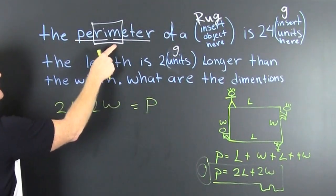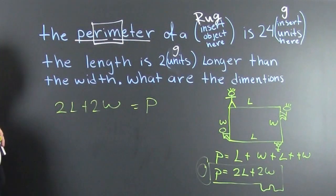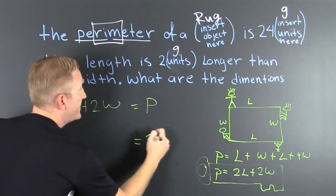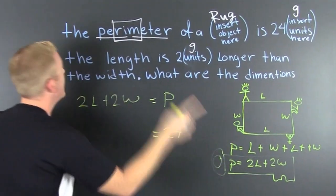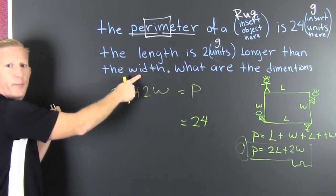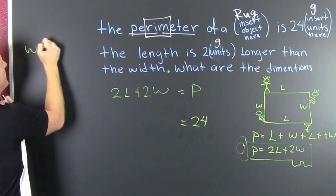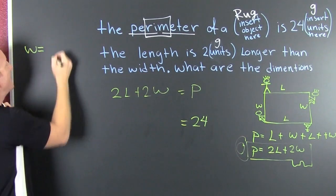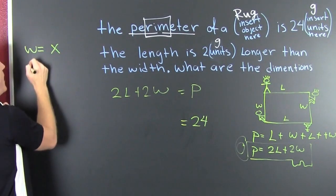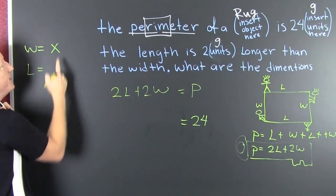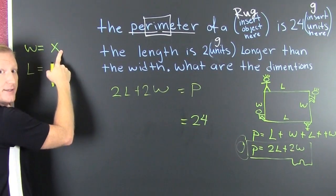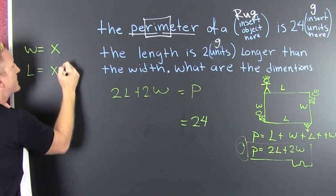So, we need to translate this. Our rug, the perimeter, is going to be 24 units. The length is 2 feet longer than the width. But, do I know what that width is gonna be? No. Let's just call it x. Our length, however, is going to be 2 units bigger than x. So this would be x plus 2.